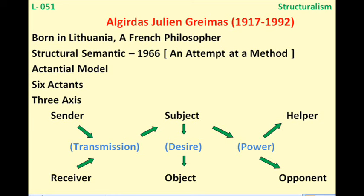The sender is much like a dispatcher who provides the hero with a target — that could be a king or the father of the heroine. The receiver is the person who gets the benefit when there is the unification or meeting of the subject and object. The sender and receiver could actually be the same character in most stories.